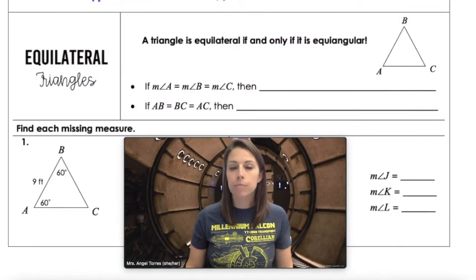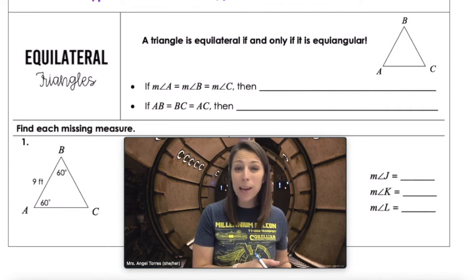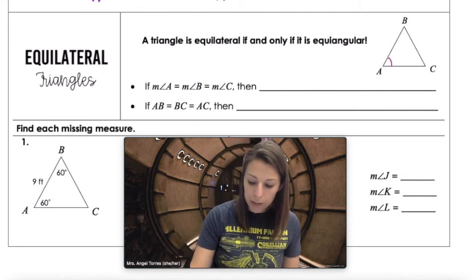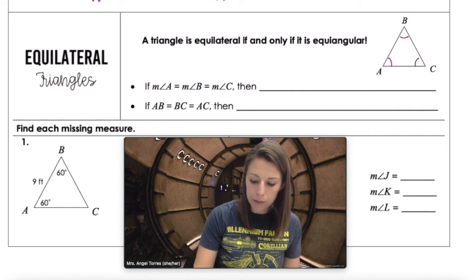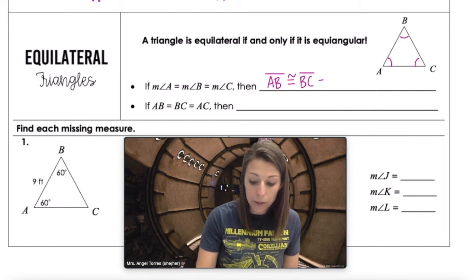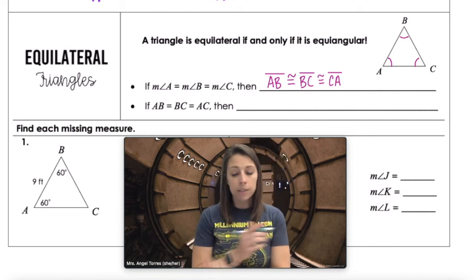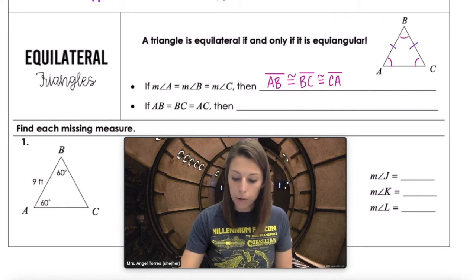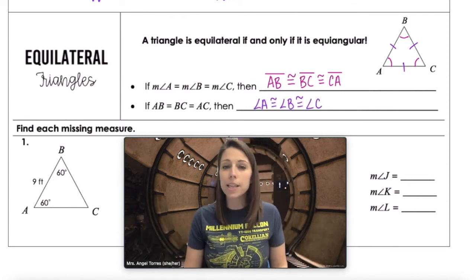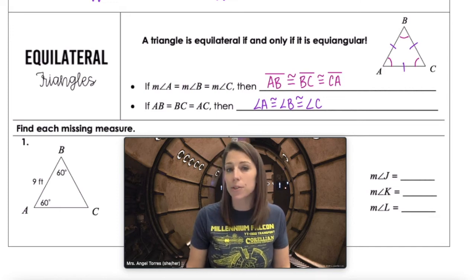Moving on to equilateral triangles. If a triangle is equilateral, it's also equiangular, and it works both ways. If all three angles are equal — angle A congruent to angle B congruent to angle C — we can conclude that side AB is congruent to side BC, which is congruent to side CA. Likewise, if the three sides are congruent, the three angles are also congruent.